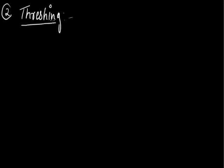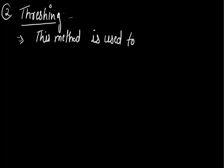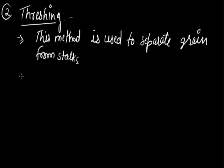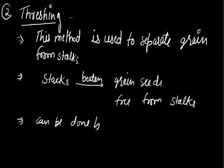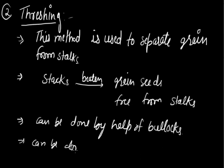The second method is threshing. This method is used to separate grain from stalks. In this method, the stalk is beaten, and grain seeds are freed from the stalks. Threshing can be done with the help of bullocks, and it can also be done by machine.